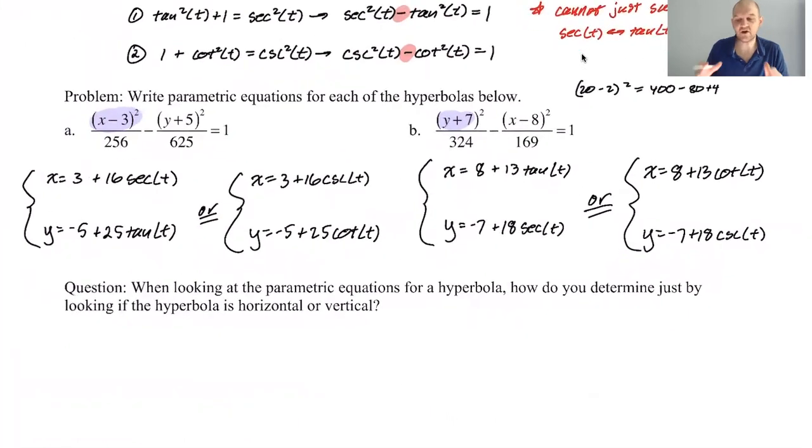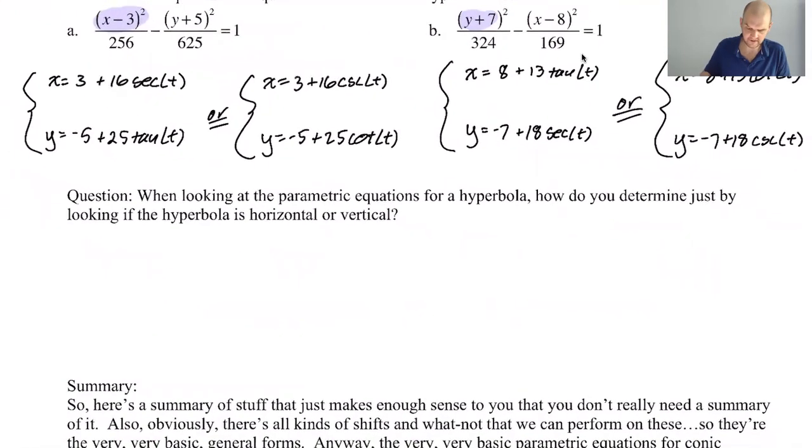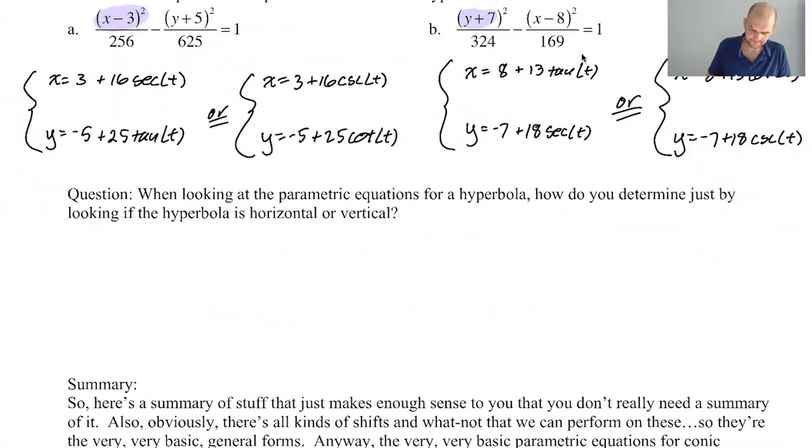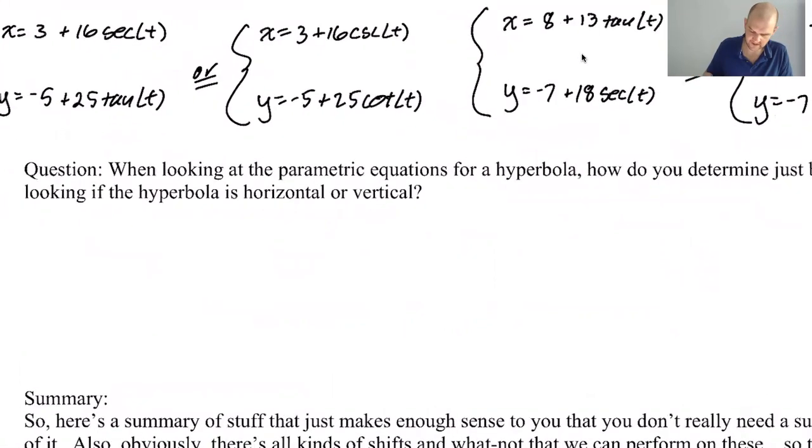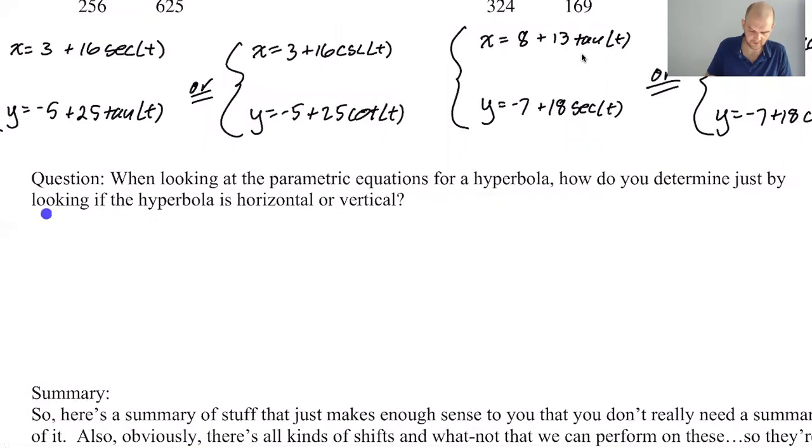So that's a finer point of hyperbola that doesn't really exist with ellipses and circles. For hyperbolas, for us, it's just like, write the equation. If you're just writing the equation, then you're going to run into a scenario where secant and tan matter. So when looking at the parametric equations for a hyperbola, how do you determine just by looking if the hyperbola is horizontal or vertical?